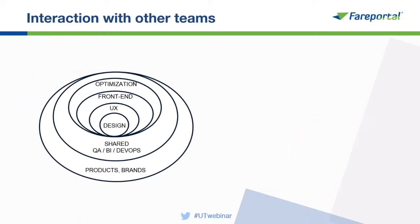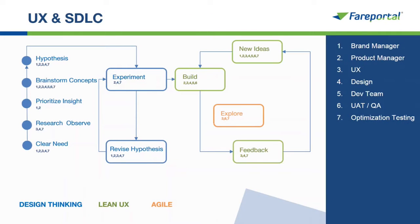Moving on to interaction with internal departments at Fairportal: design is at the core and UX, front-end, and optimization all come together under the same umbrella. We work with shared units including business intelligence, DevOps, and QA. On top of everything we have the products and brands. We embrace Lean UX within the organization and do research at different stages of development. The starting point is clear needs, and there is no end point because it's a continuous cycle.